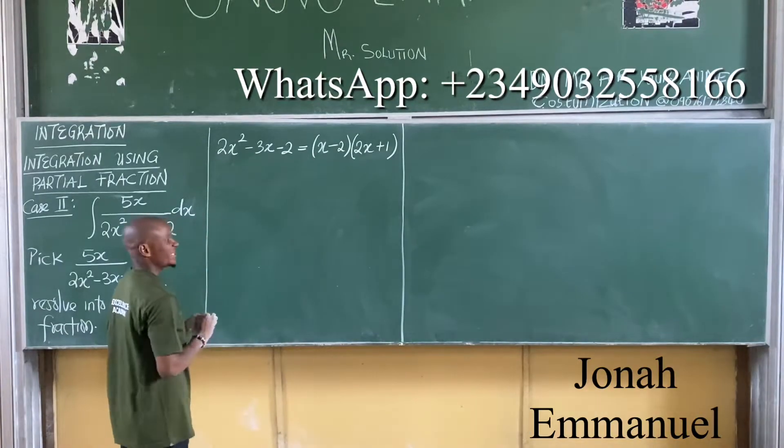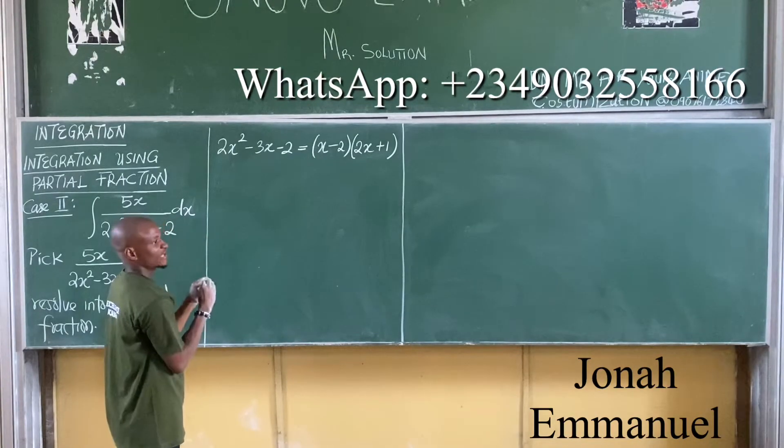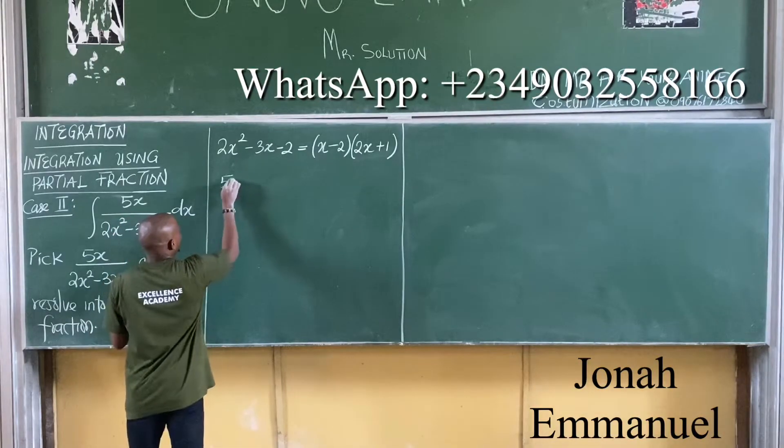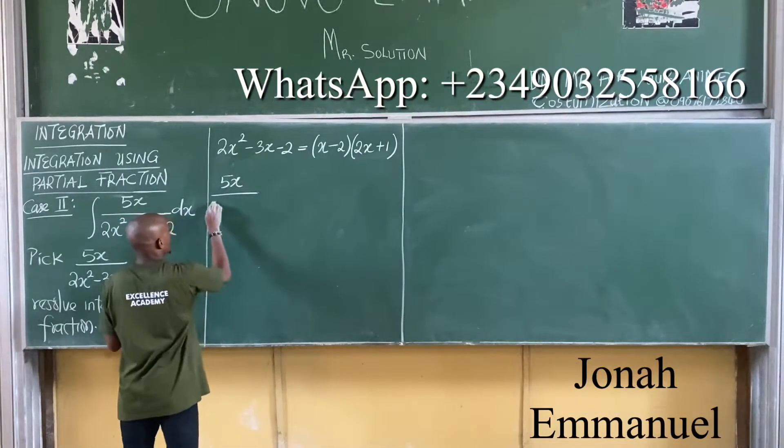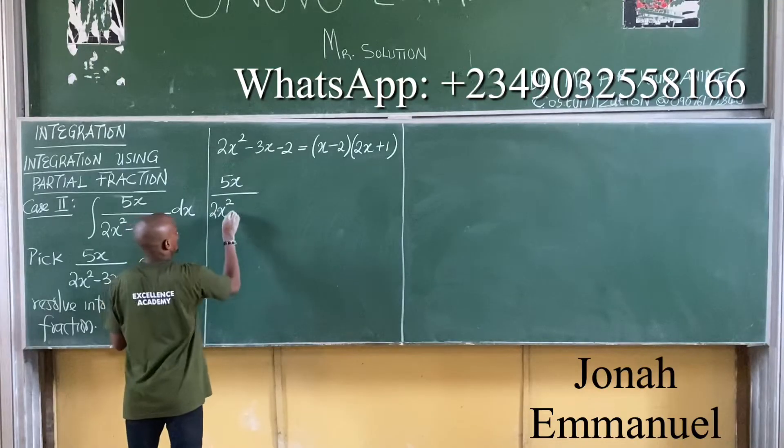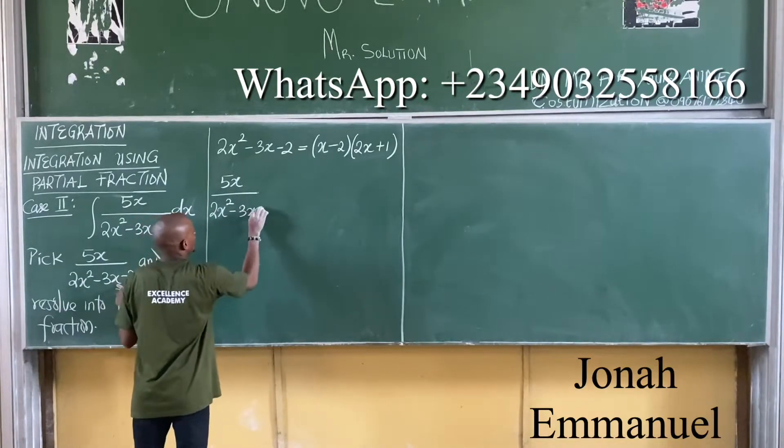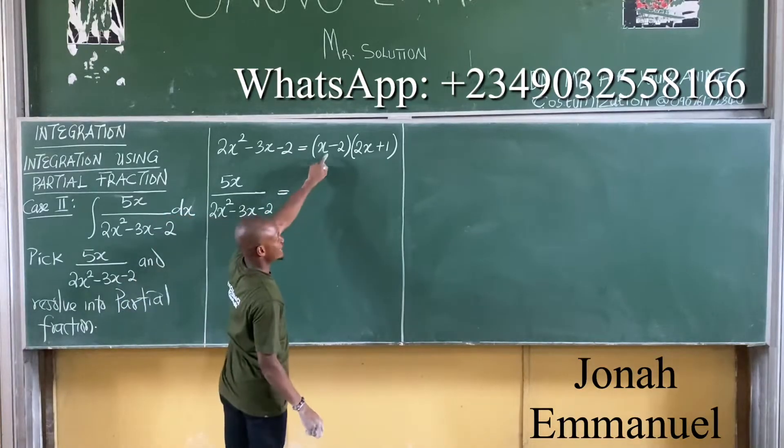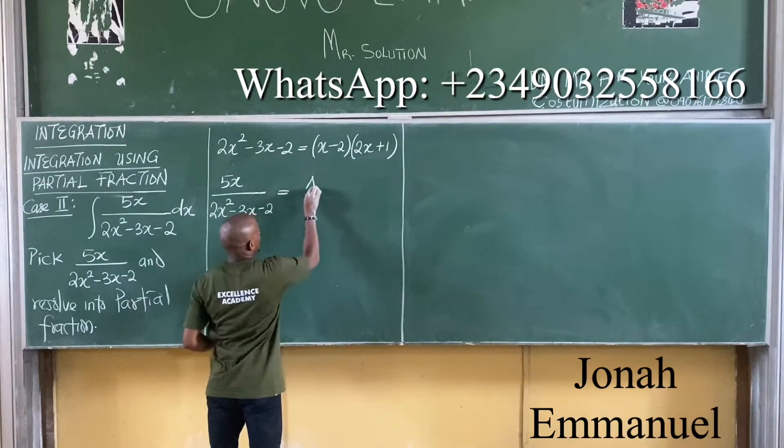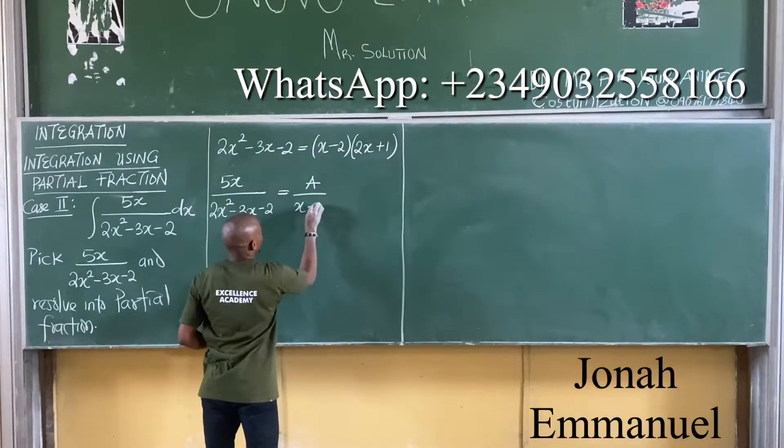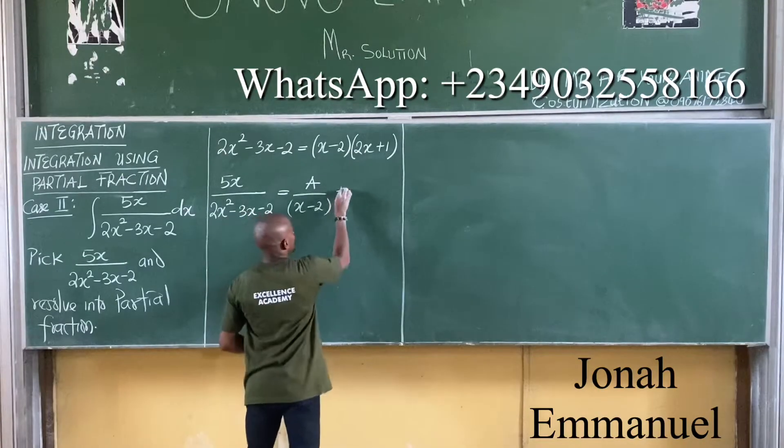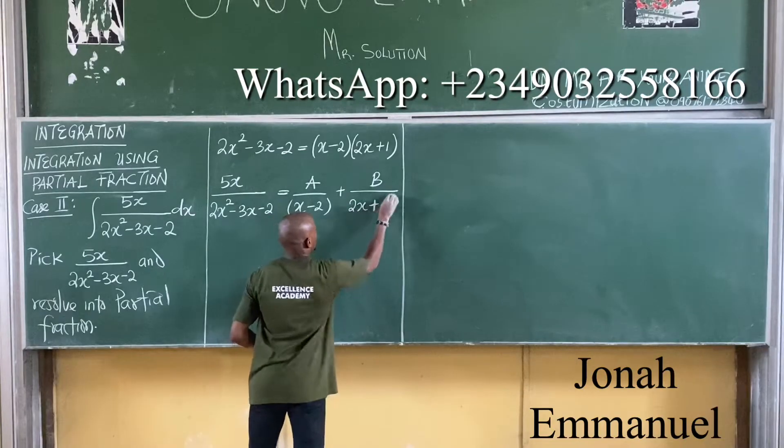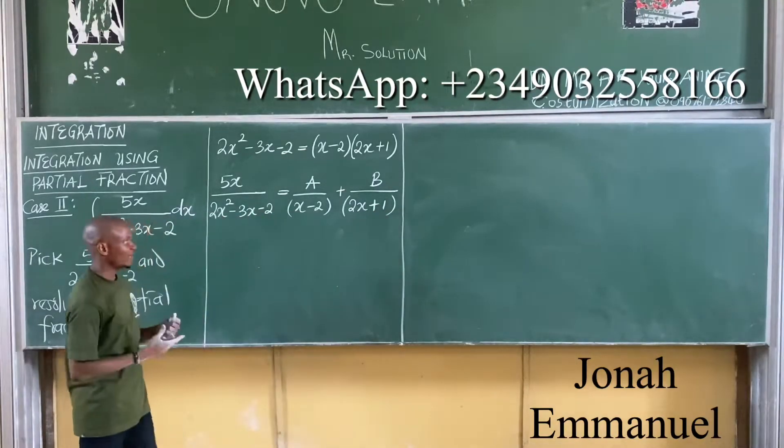My next task now will be to get the form of partial fraction. For this one it becomes 5x all over 2x squared minus 3x minus 2 is equal to A over x minus 2 plus B over 2x plus 1.